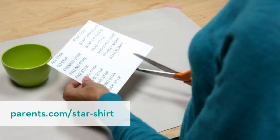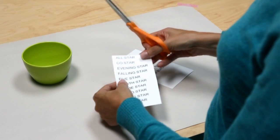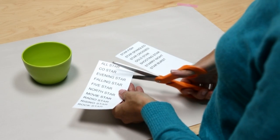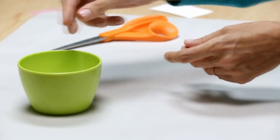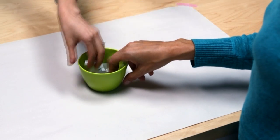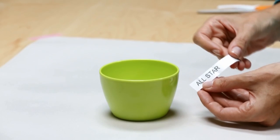Go to parents.com/star-shirt to download our list of popular star phrases. Just print them out and cut them into small pieces and drop them into a bowl. Ask everyone to choose a piece of paper and then create a design on their one piece that follows that theme.